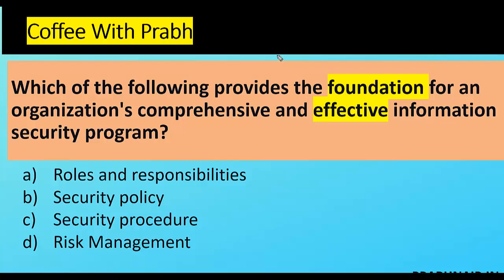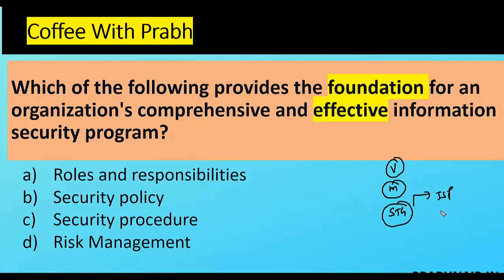First coffee shot: which of the following provides the foundation for an organization's comprehensive and effective information security program? To understand this, consider how an organization culture works. First, we have a vision; based on the vision we have a mission; based on the mission we create a strategy. The strategy includes the first part called the information security policy.